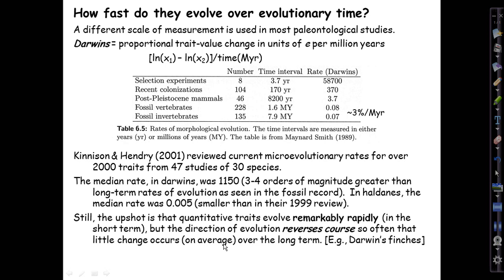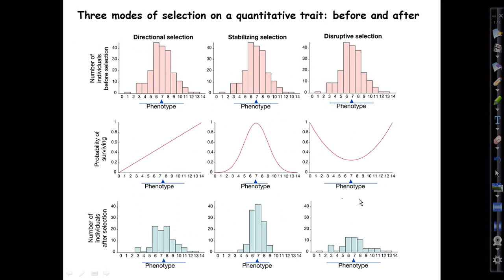The upshot is, however you slice it, that quantitative traits do apparently evolve remarkably rapidly in nature — at speeds you would never guess just from the fossil record or other long-term benchmarks. But evidently the direction of evolution reverses course in nature so often that little net change occurs over the long term. We already saw one classic example of that with the beak and body size evolution of the medium ground finch on Isla Daphne Major.